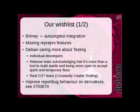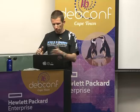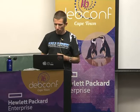I'd like reportbug to behave better on derivatives, because it reports bugs directly to Debian without warning the user. For the release team, I'd like some way to gather data about transitions — I'd like to know if Kali is affected. We have trackers on the Debian side, but I'd like to check on the Kali side without running my own tracker and duplicating all that tracking work, and be informed when a transition is complete so I can check in a timely manner whether we have something to rebuild.